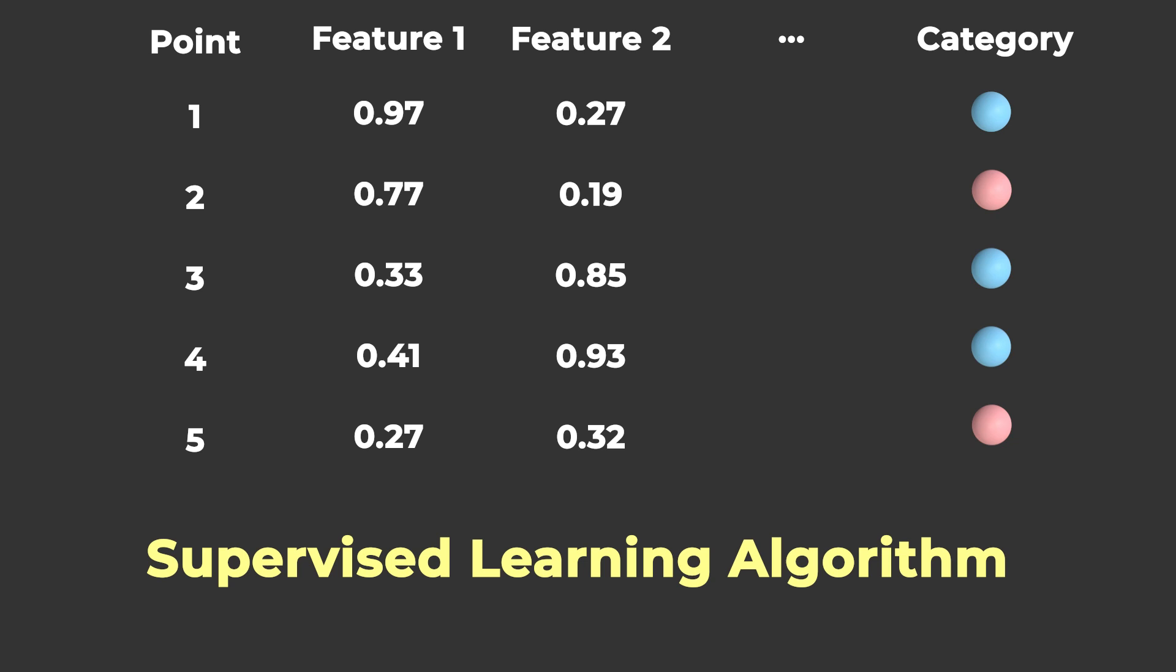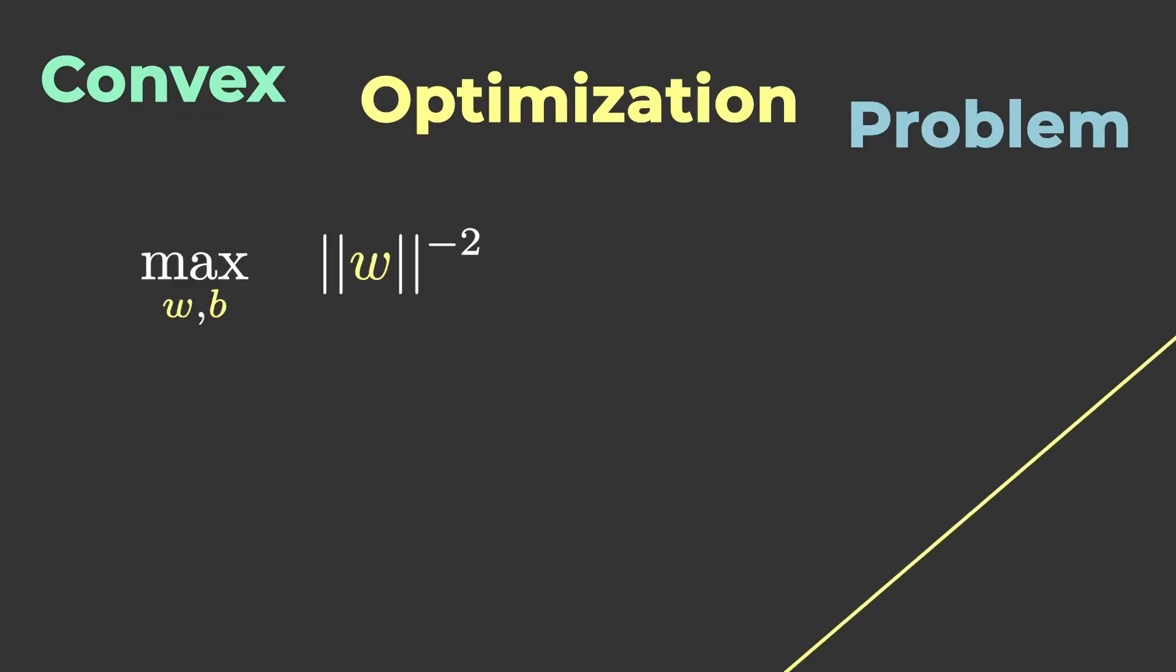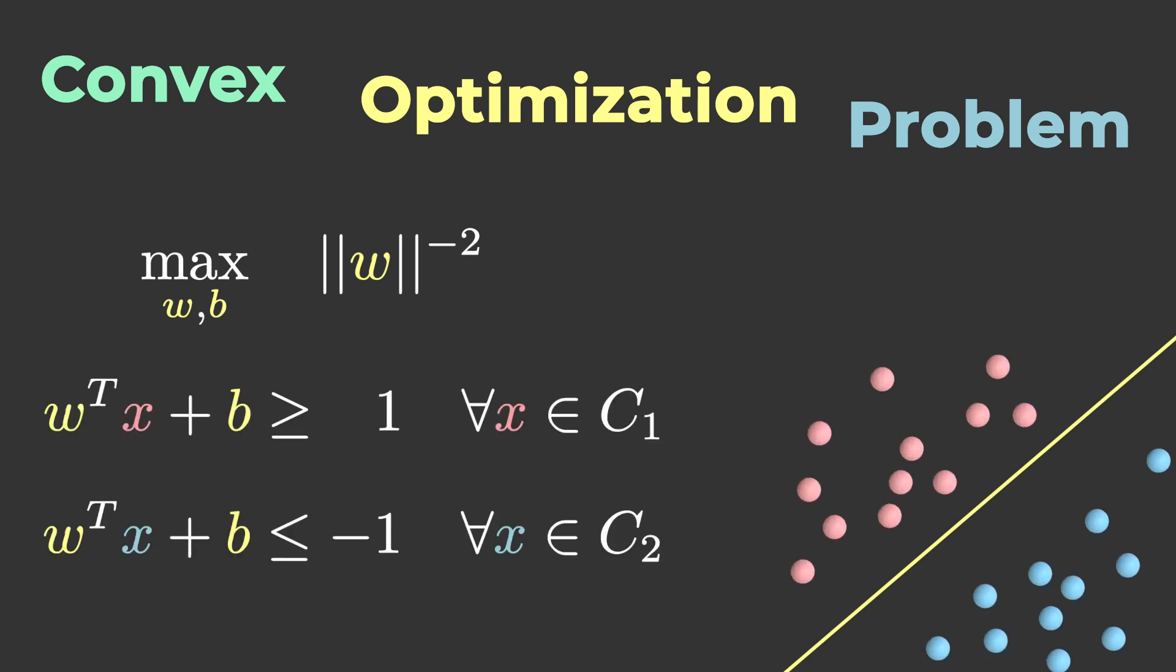In the background, SVM solves a convex optimization problem that maximizes this margin, and where the constraints say that points of each category should be on the correct side of the hyperplane.